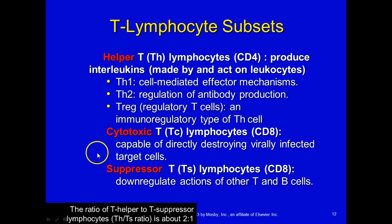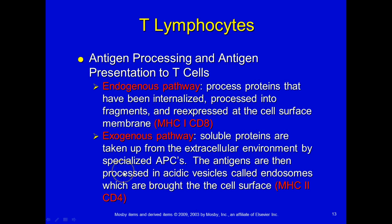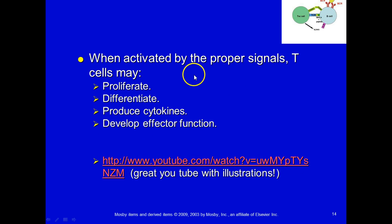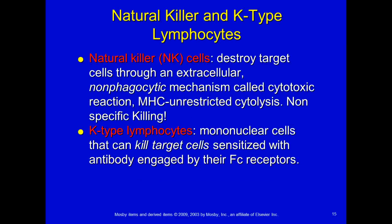The ratio of T helper to T suppressor is usually two to one — you want more helpers than suppressors. There are two pathways for antigen processing and presentation to T cells. The endogenous pathway is when a cell processes proteins that have been internalized — it eats a bacteria, processes it into fragments, and re-expresses it at the cell surface, more of a T suppressor type. The exogenous pathway is when soluble proteins are taken up from the extracellular environment by specialized antigen-processing cells, processed in acidic vesicles, and brought to the cell surface — more of a CD4 type. When activated, T cells can proliferate, differentiate, produce cytokines, and develop effector function.